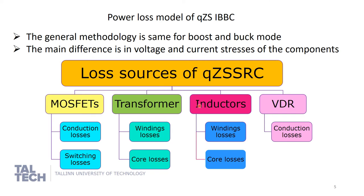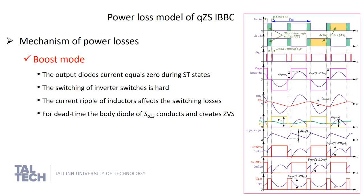The loss sources of the converter include MOSFET losses, transformer losses, inductor losses, and voltage doubler rectifier losses. MOSFET losses consist of conduction losses and switching losses. Transformer and inductor losses include winding losses and core losses. At the voltage doubler rectifier we have only conduction losses of diodes. The general methodology is the same for boost and buck mode, and the main difference is in the voltage and current stress of the components, which drives the power loss mechanisms.